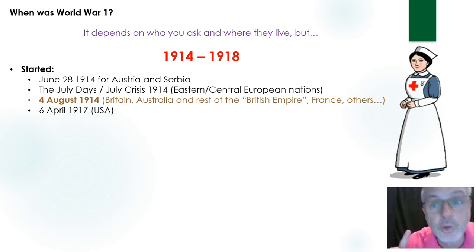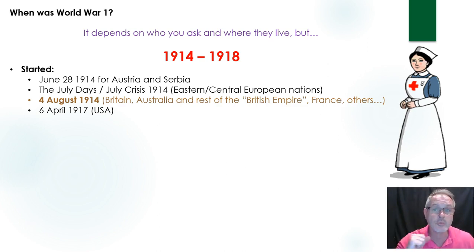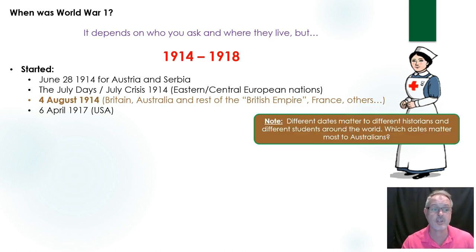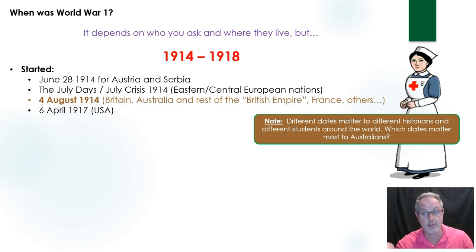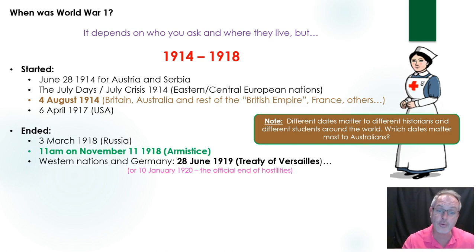The date we really want to focus on is August 4th, 1914, when Britain, Australia and the rest of the British Empire, Canada, New Zealand, France and some other nations went to war. But if you're in an American high school, you'd find you'd be talking about America going to war — starting World War I — in 1917. The different dates matter to different historians and students. You have to be aware of which ones matter most to us as Australians, and understand why dates might vary if you're looking at sources online.